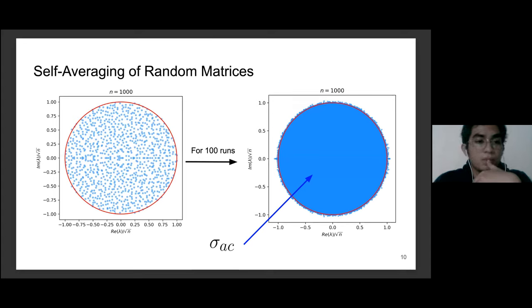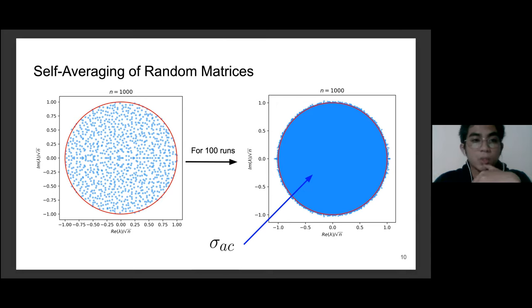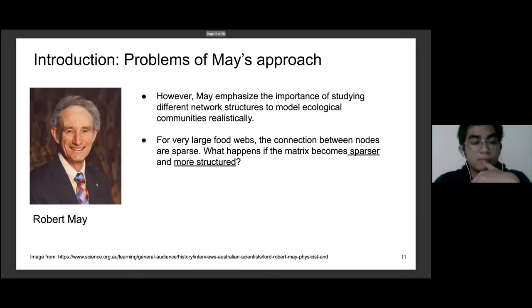One powerful property of random matrices is called self-averaging: if we have a random matrix with a certain structure and compute the spectrum of eigenvalues, across many runs we find the spectrum follows the same behavior as long as the structure is the same. We observe a bulk of eigenvalues called the absolutely continuous spectrum, which will be important for later discussion.